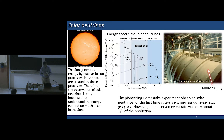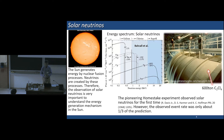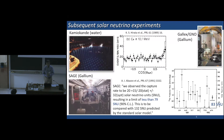However, there's a problem. The observed event rate was only about one third of the prediction. People were puzzled. People argued that maybe there was some problem in the experiment, or maybe in the calculation of the solar neutrino flux, or maybe we do not understand neutrinos well. Anyway, people thought it was very important to have another experiment to confirm the Homestake results. Then there were several subsequent solar neutrino experiments, the first of which was the Kamiokande experiment.